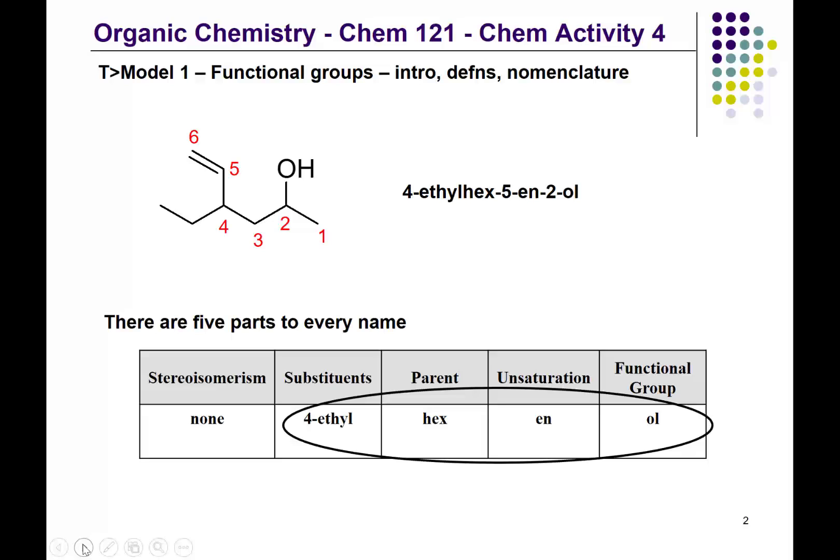So we've got 4-ethyl, hex, 5-ene, and then the functional group alcohol, and we indicate that it is on carbon number two. The locant is two, so that's the OL.